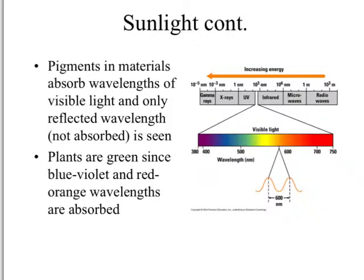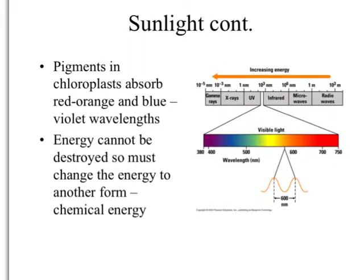That same concept applies to any color you see: you see it because the pigments in that material are reflecting that color and absorbing every other wavelength of light. In plants, the pigments within the chloroplast absorb the red, orange, blue, and violet wavelengths and reflect the green and yellow. According to the law of conservation of energy, energy cannot be created or destroyed, so the energy the plant absorbs must be changed into another form — namely, chemical energy.